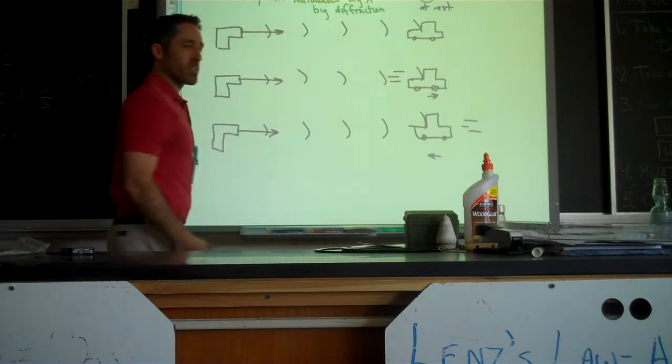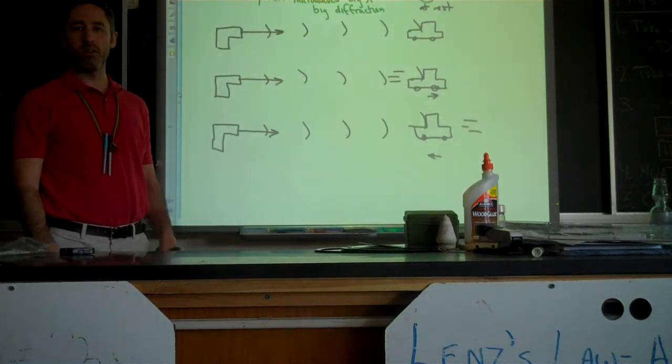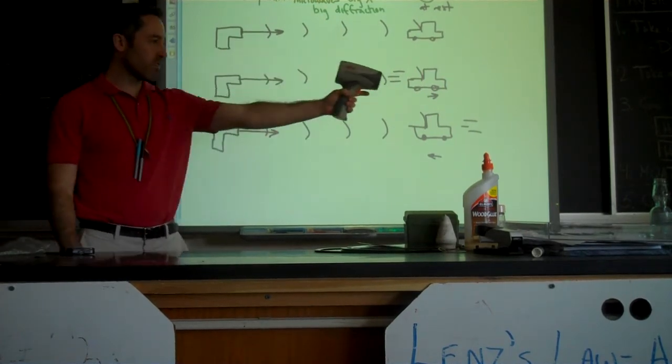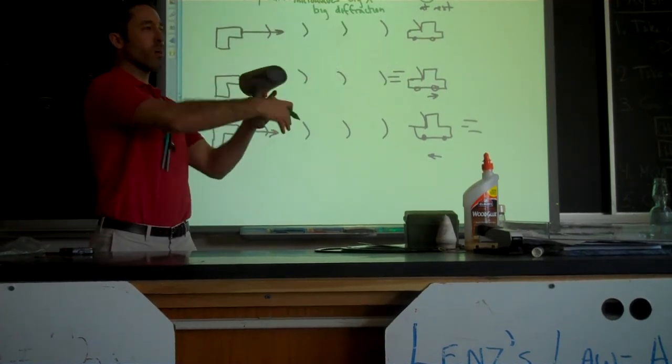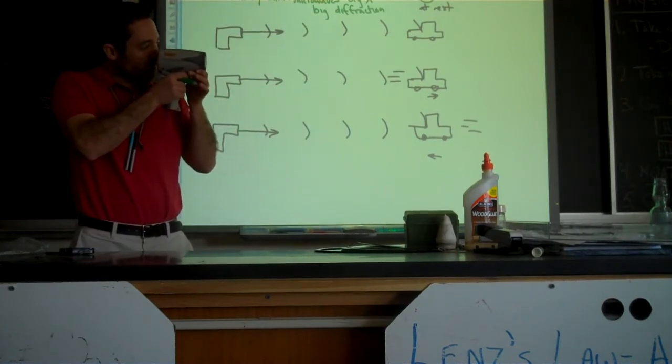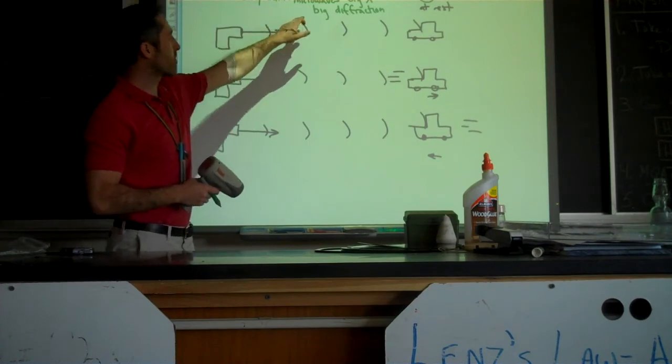So what does that actually mean though? Big diffraction means the wave does what? Spreads out. So if you're just loosely like, the wave spreads out, you don't know what it's hitting. So you really have to aim carefully to help compensate for that diffraction.